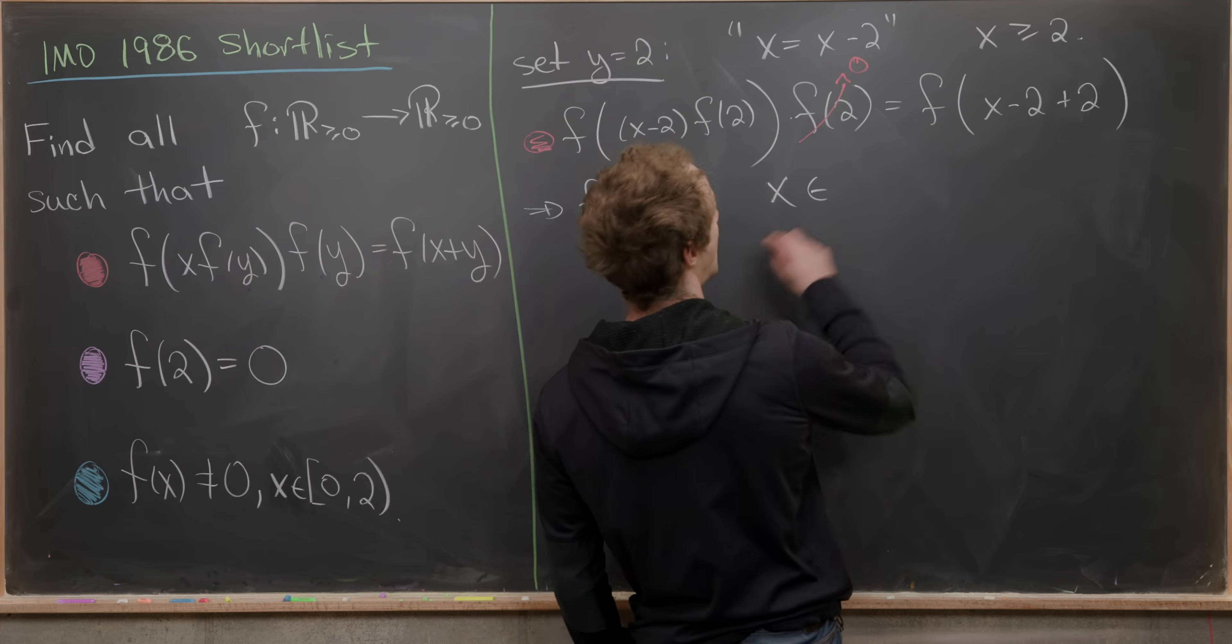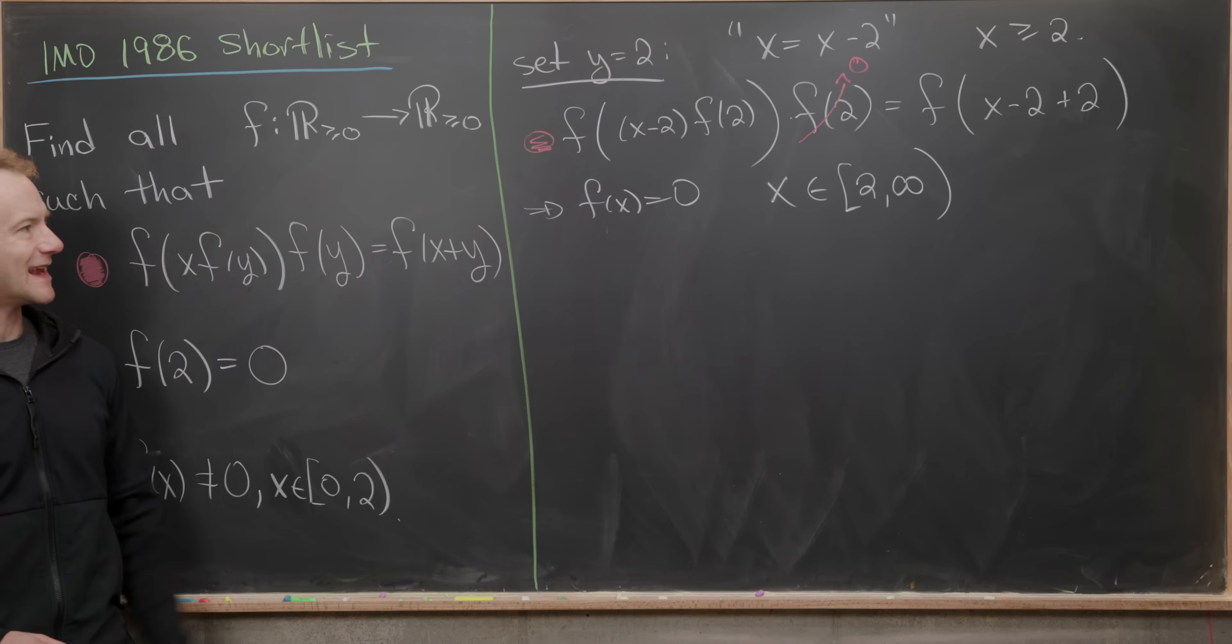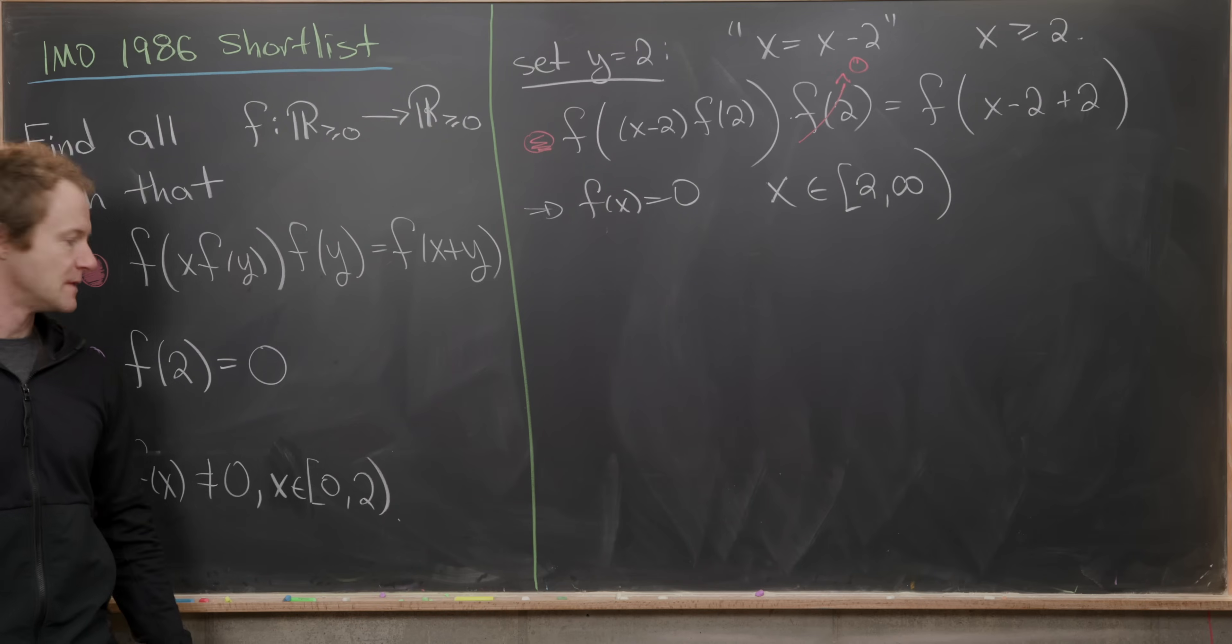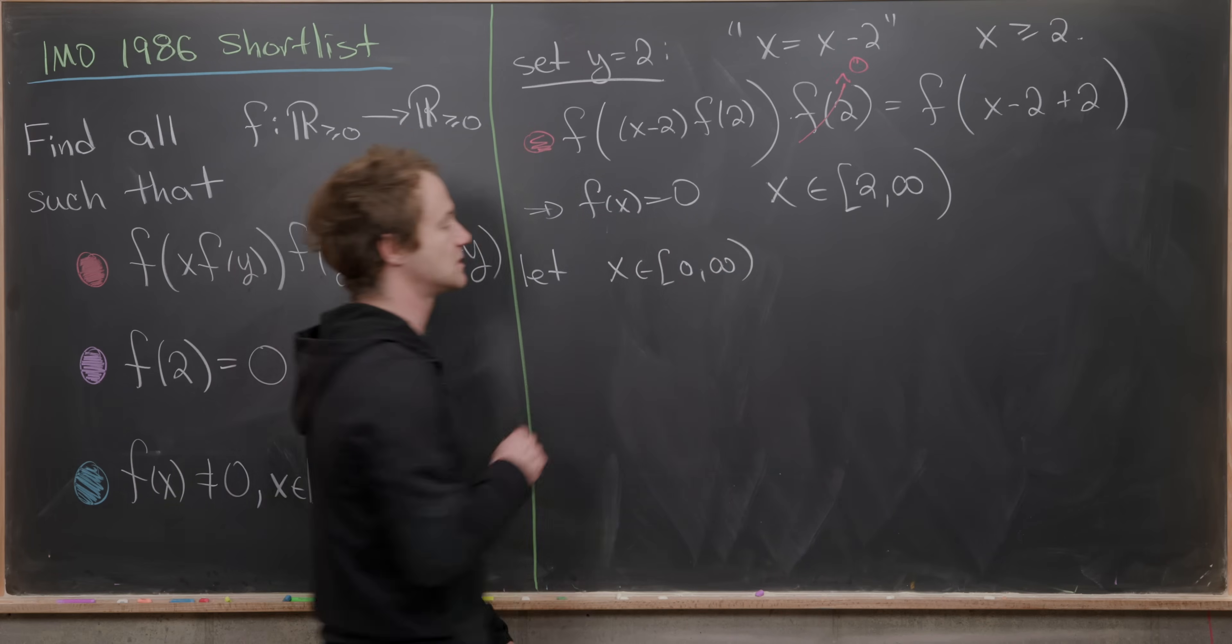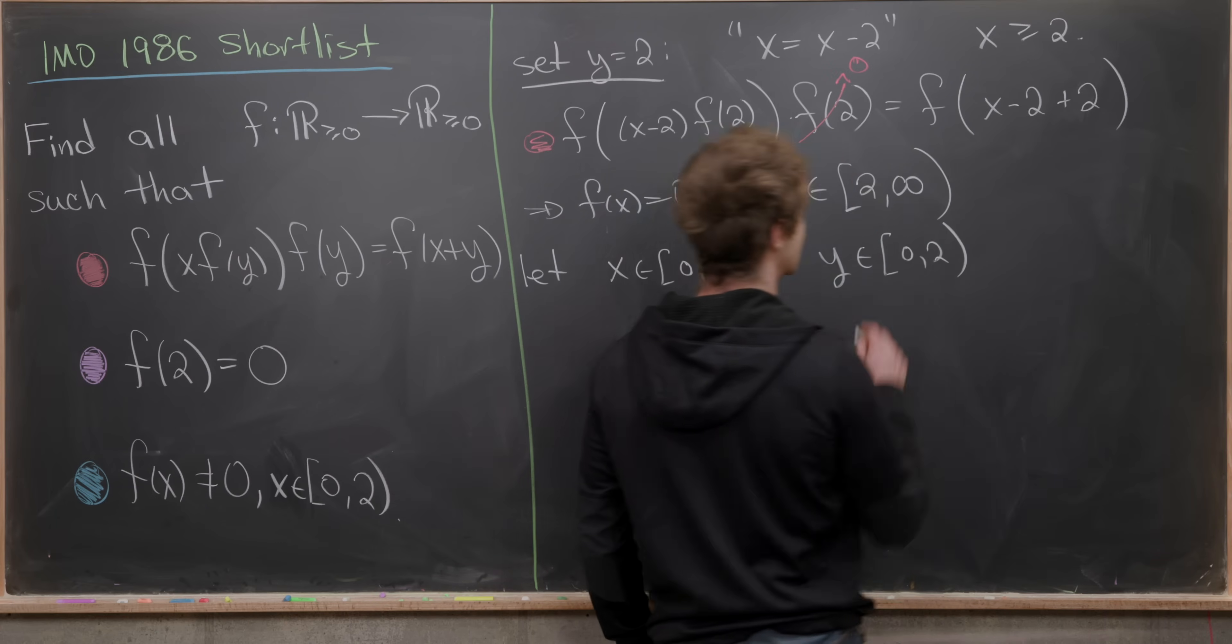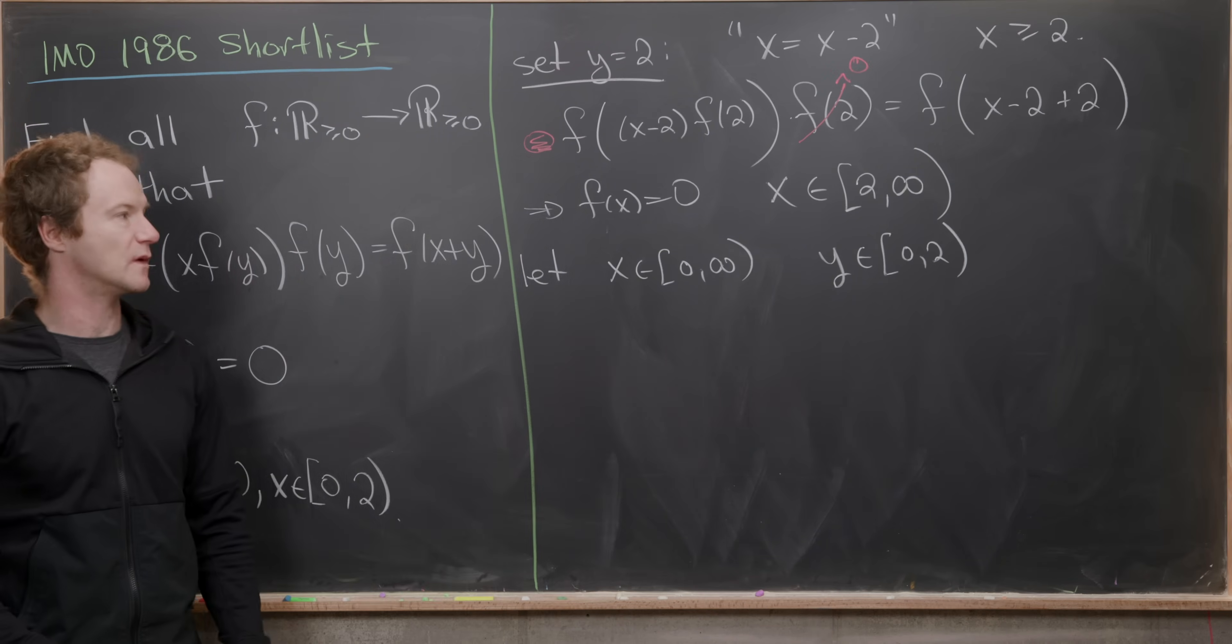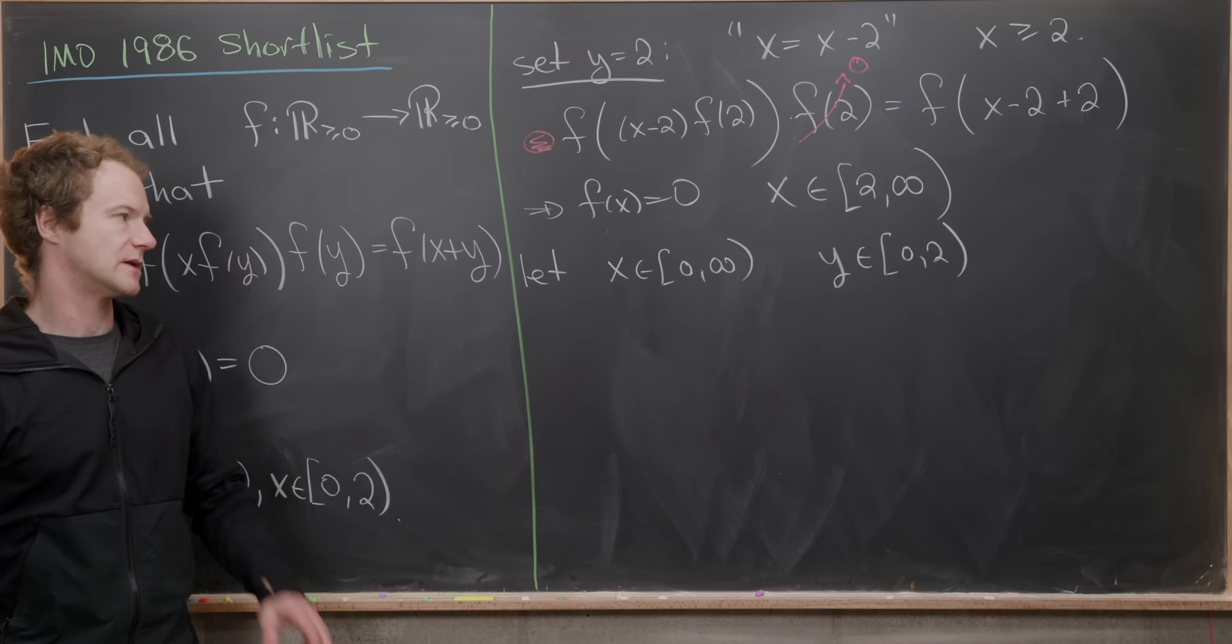And then that tells us that f(x) = 0 given that x started off being bigger than or equal to 2. So I'm going to write that as x is on the half open interval from [2,∞). So we know that f is 0 on that huge interval. Now we just need to figure out what it is right here. Now we want to take an arbitrary x value from our domain and then a y value from this interval that we haven't pinned down yet. So let's let x be on the interval from [0,∞), and we'll let y be on the interval [0,2). And just to reiterate, this is the place where we do not know what the function looks like. We know what the function looks like on the rest of the positive real number line but not there.